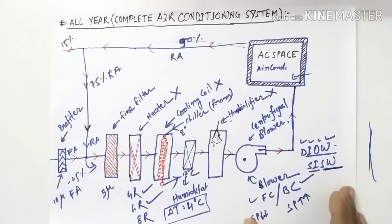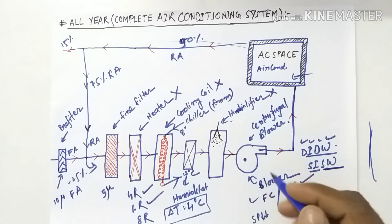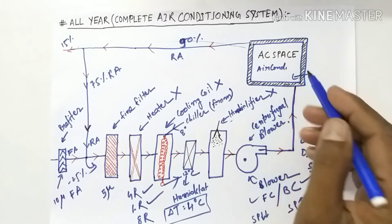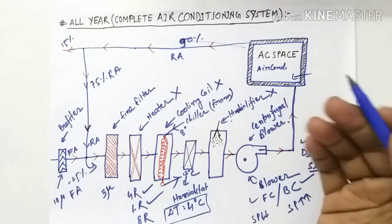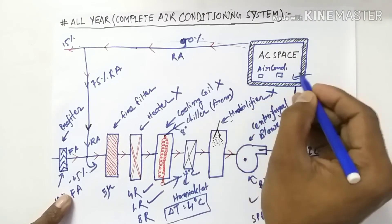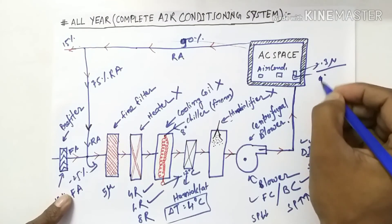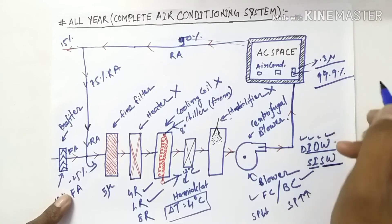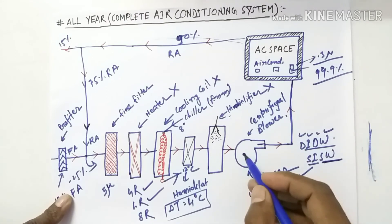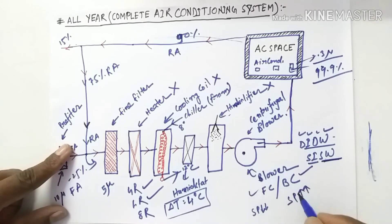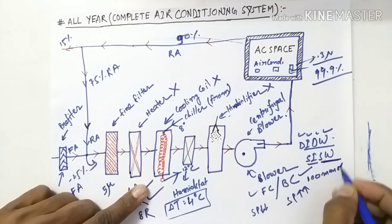This is all about the all-air air conditioning system, and what kind of fan will be selected depends on the air conditioning space. If we put a HEPA filter here, the HEPA filter rating is 0.3 micron with 99.9% efficiency. In that case, we will require a high static pressure blower — meaning the blower will be backward curve and the static pressure will be above 100 mm of water gauge.